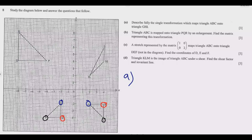Since the area does not change, it can only be translation, rotation, or reflection. Looking at whether corresponding sides are facing each other — A and G are facing each other, but H and B are not, and C and I are not. So it cannot be reflection; that option is out.